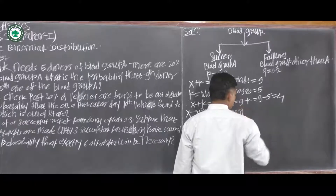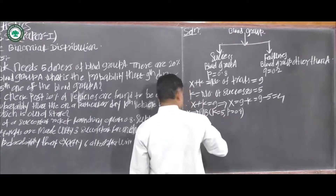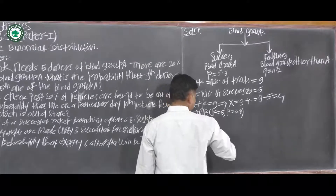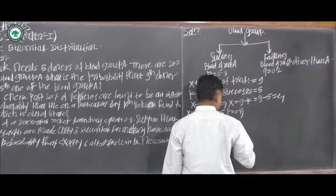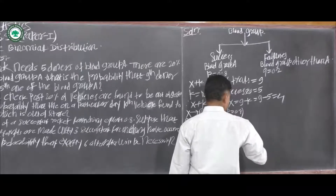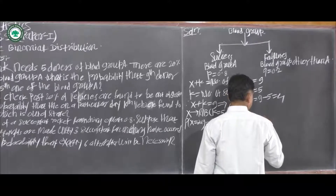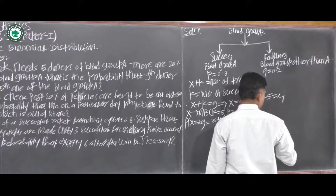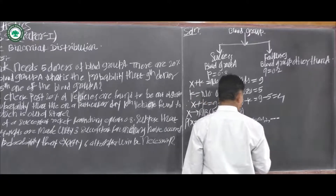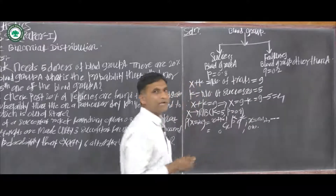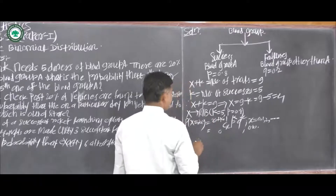The random variable X follows a negative binomial distribution with parameters K equals 5 and P equals 0.8. The probability mass function is: P(X = x) = (x + K − 1 C x) · P^K · Q^x, for x = 0, 1, 2, ..., and 0 otherwise. The required probability is P(X = 4).